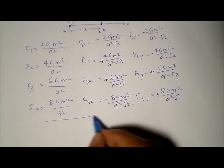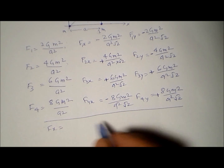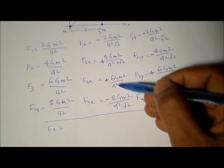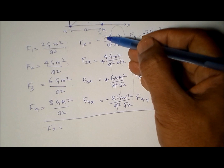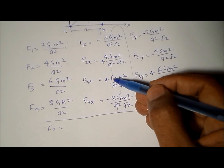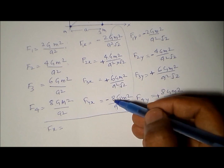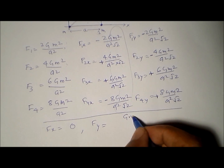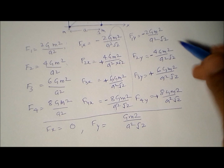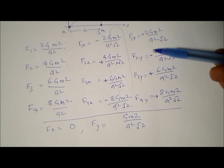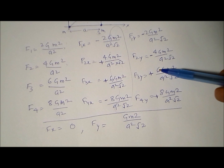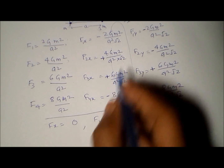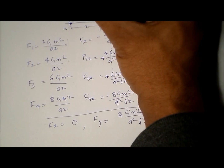Now we add all x-direction forces and all y-direction forces. The factor Gm²/(a²√2) is common. For Fx: −2 + 4 + 6 − 8 = 0, so Fx = 0. For Fy: −2 − 4 + 6 + 8 = 8, giving Fy = 8Gm²/(a²√2). The resultant force acts entirely in the y-axis direction with magnitude 8Gm²/(a²√2).